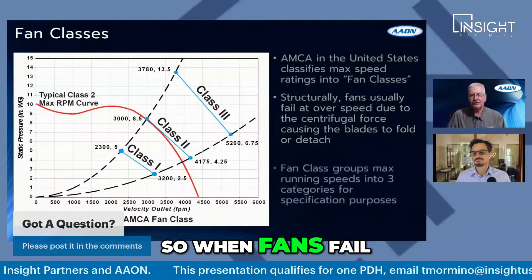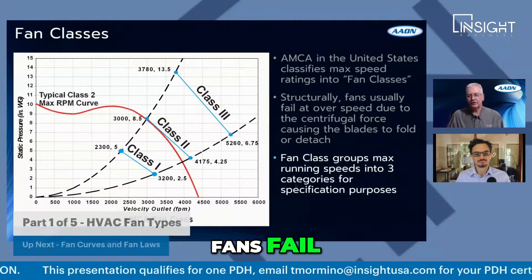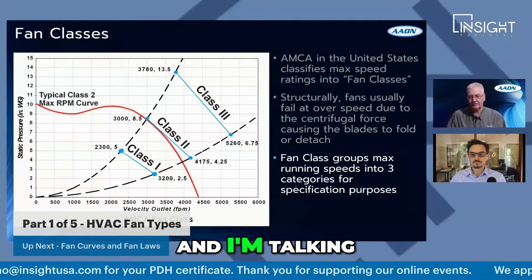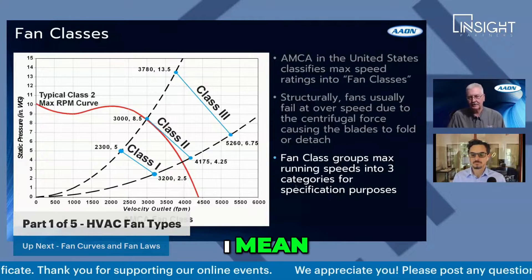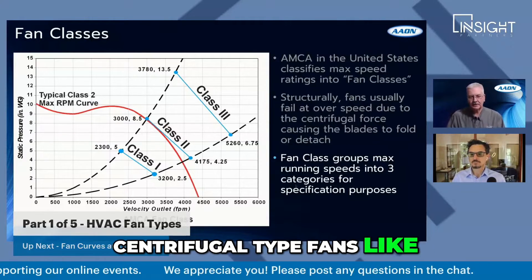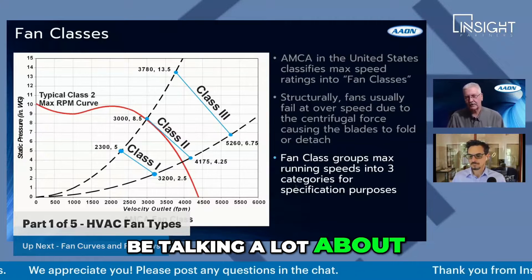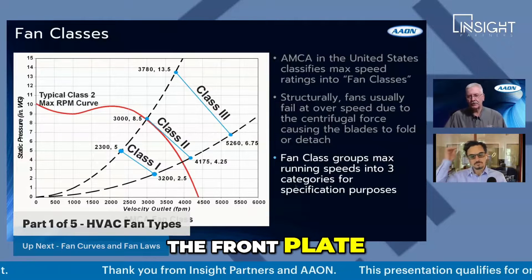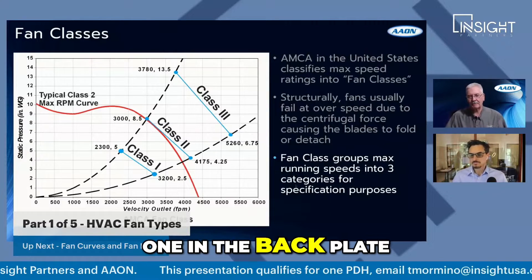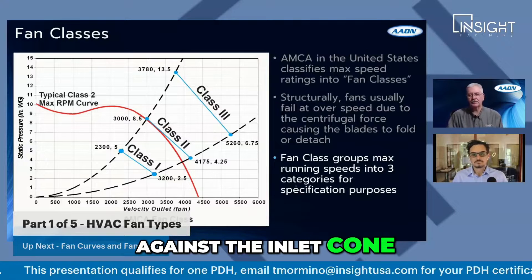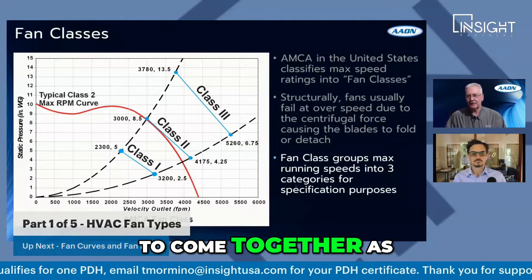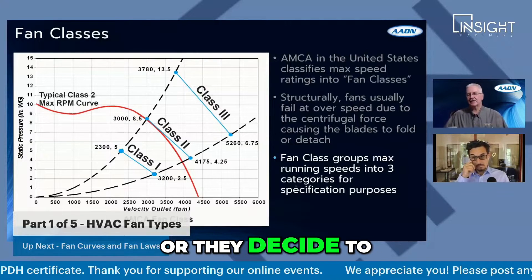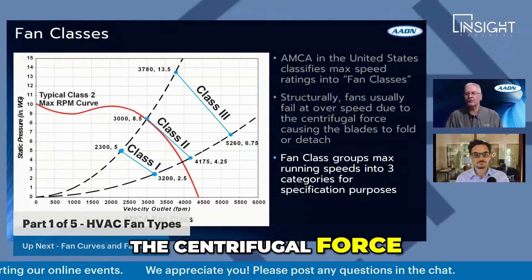When fans fail, they fail in kind of two ways. They fail from centrifugal force on the blades — and I'm talking about centrifugal type fans like we're going to be discussing. In a centrifugal fan, the front plate and the back plate — the one up against the inlet cone — basically try to come together as the blades bend in the middle from centrifugal force, or the blades decide to leave the fan and eject due to that centrifugal force.